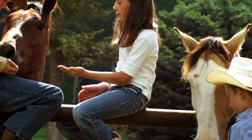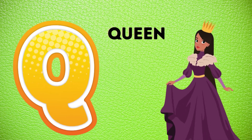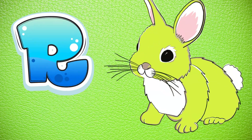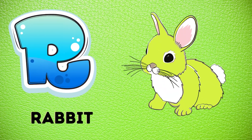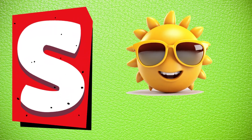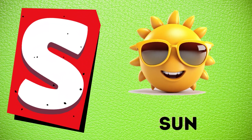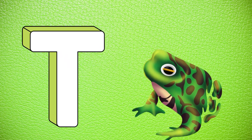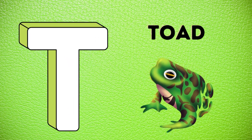Q is for queen, k-k-queen. R is for rabbit, r-r-rabbit. S is for sun, s-s-sun. T is for toad, t-t-toad.